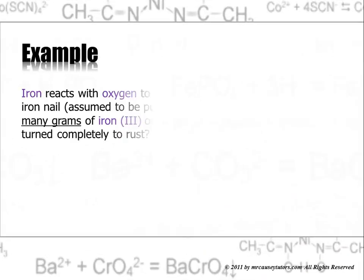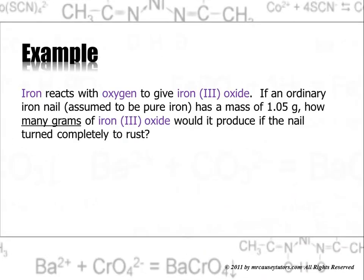Let's do an example. Iron reacts with oxygen to give iron 3 oxide. If an ordinary iron nail, assumed to be pure iron, has a mass of 1.05 grams, how many grams of iron 3 oxide would it produce if the nail turned completely to rust? Now, the first thing you want to do is write a balanced equation. So, that's what I'm going to do. There's the equation, and there it is balanced.